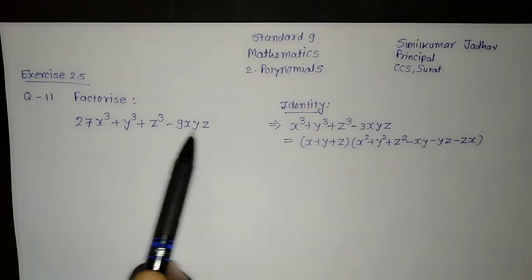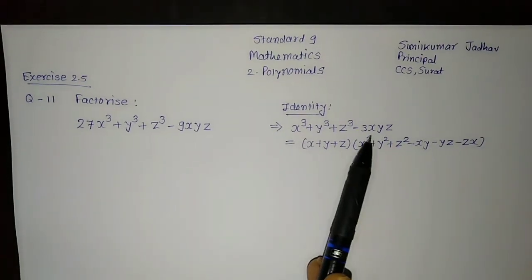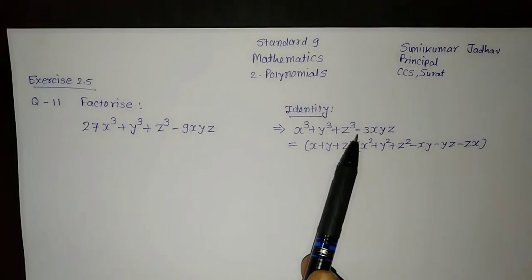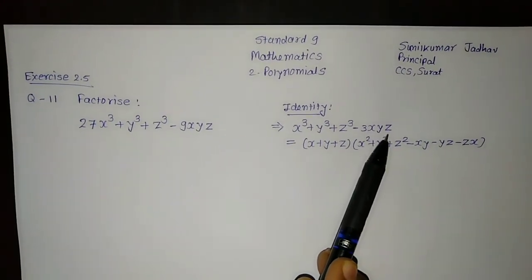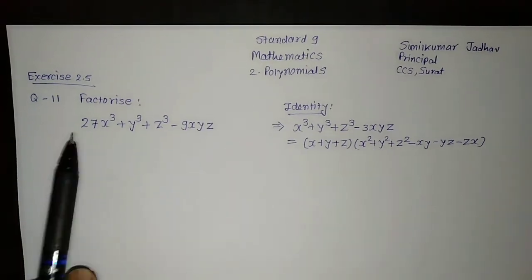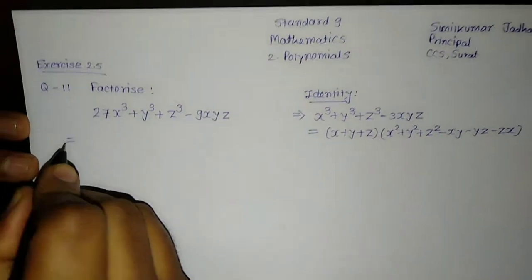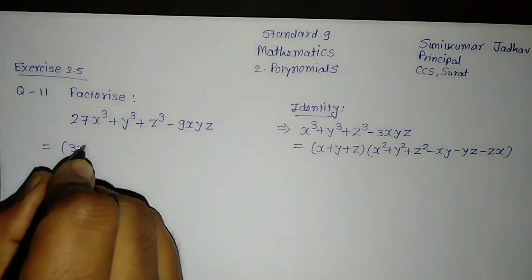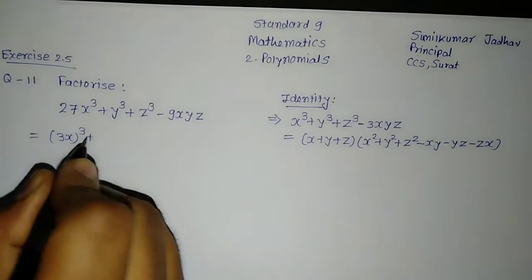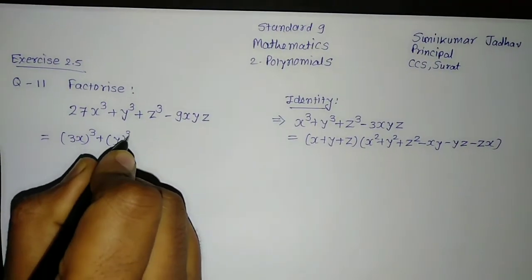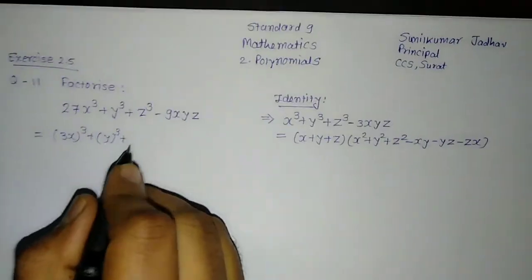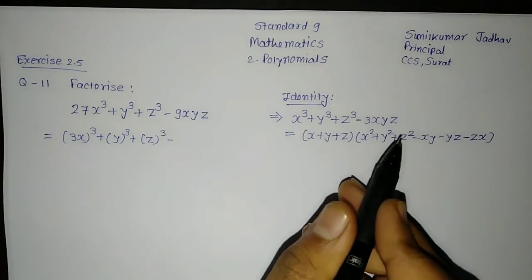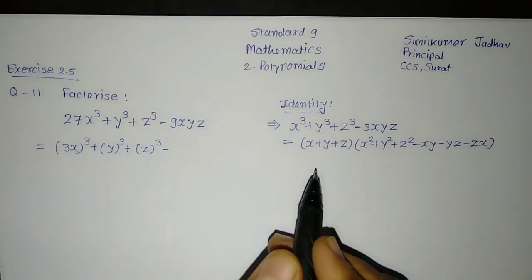First of all, we need to convert the given expression into the format: first term cubed plus second term cubed plus third term cubed minus 3 times first term times second term times third term. Let us see whether we can convert this. Note that 27 is a cube of 3, so I write (3x)³. y³ and z³ are already cubes. Now for the last term, 9xyz equals 3 times 3x times y times z.